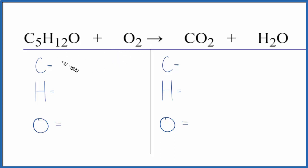Five carbons, twelve hydrogens, and one plus two, three oxygens on the reactant side. On the product side, one carbon, two hydrogens, and two plus one, three oxygen atoms. Let's just start by fixing the carbons. Put a five here, one times five that equals five.